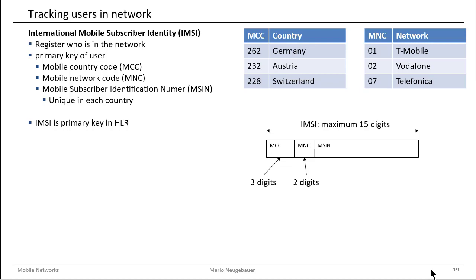For example, Eplus was a provider before and it was bought by Telefonica, and still there's a Mobile Network Code for the Eplus network. The last part is the Mobile Subscriber Identification Number, the MSIN, and this MSIN needs to be unique within one country only. All providers within one country have to agree on this Mobile Subscriber Identification Number, and with the MSIN you can identify the mobile user worldwide.